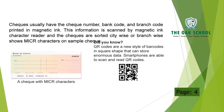Checks usually have the check number, bank code, and branch code printed in magnetic ink. This information is scanned by the magnetic ink character reader and the checks are sorted city-wise or branch-wise. You can see the MICR characters on checks — the check number, bank code, and branch code are written in magnetic ink, as you can see in pictures.